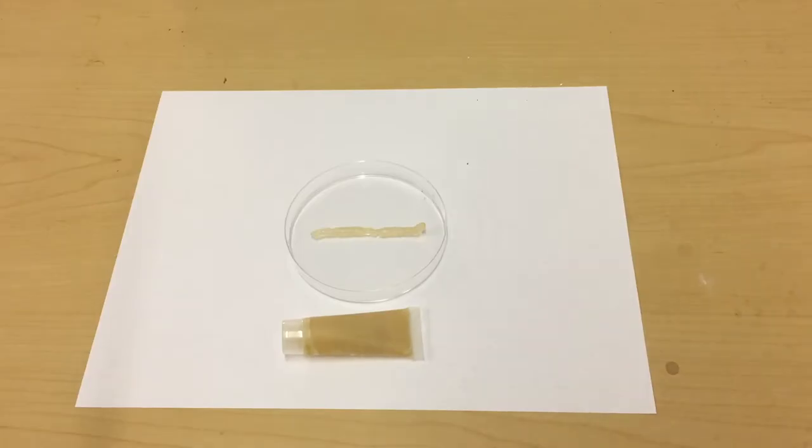The majority of silver gels currently on the market are prone to discoloration after exposure to high temperature. In this petri dish, we have a sample of incorrectly formulated gel. After exposure to steam sterilization, the gel discolors and turns a yellowish tan.